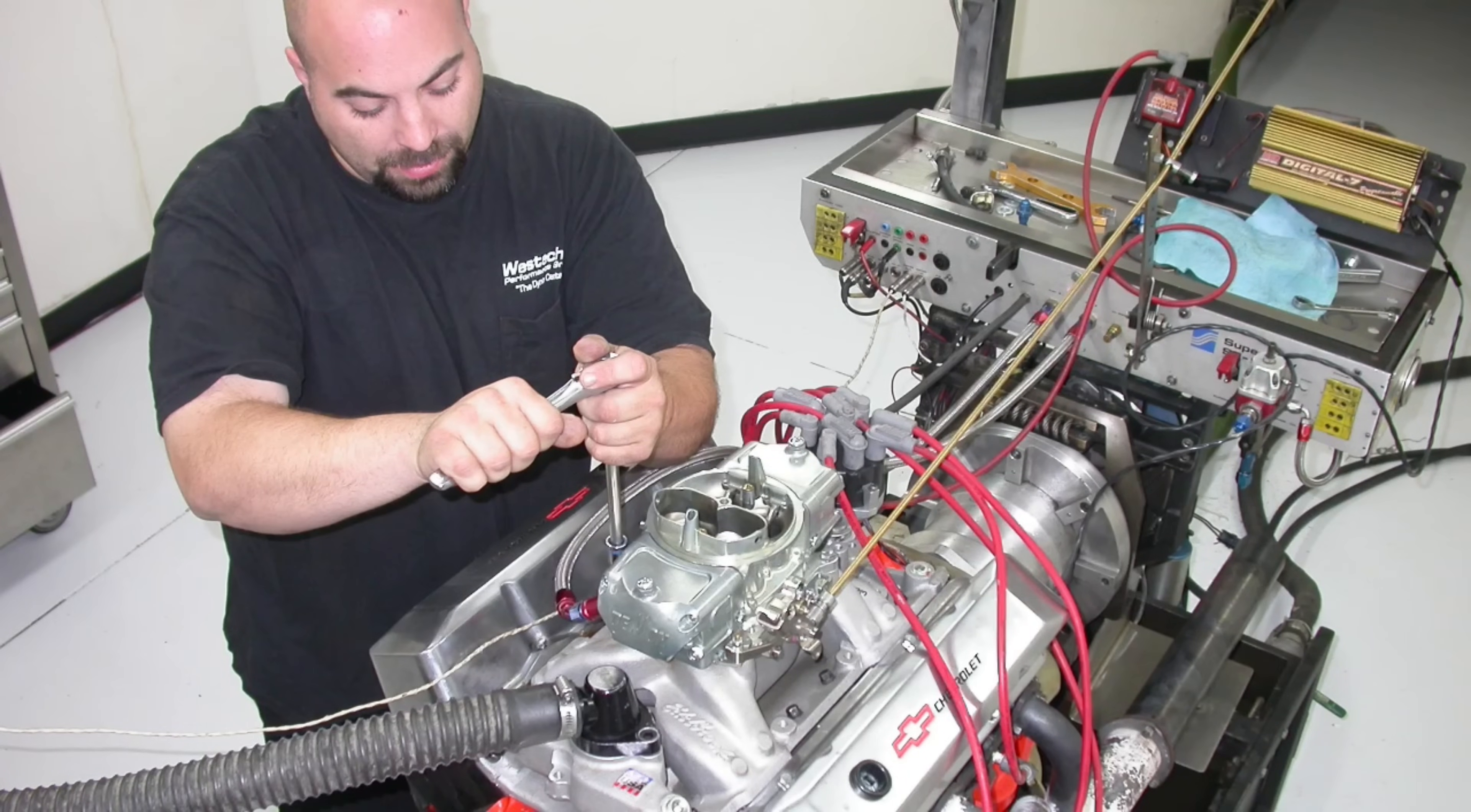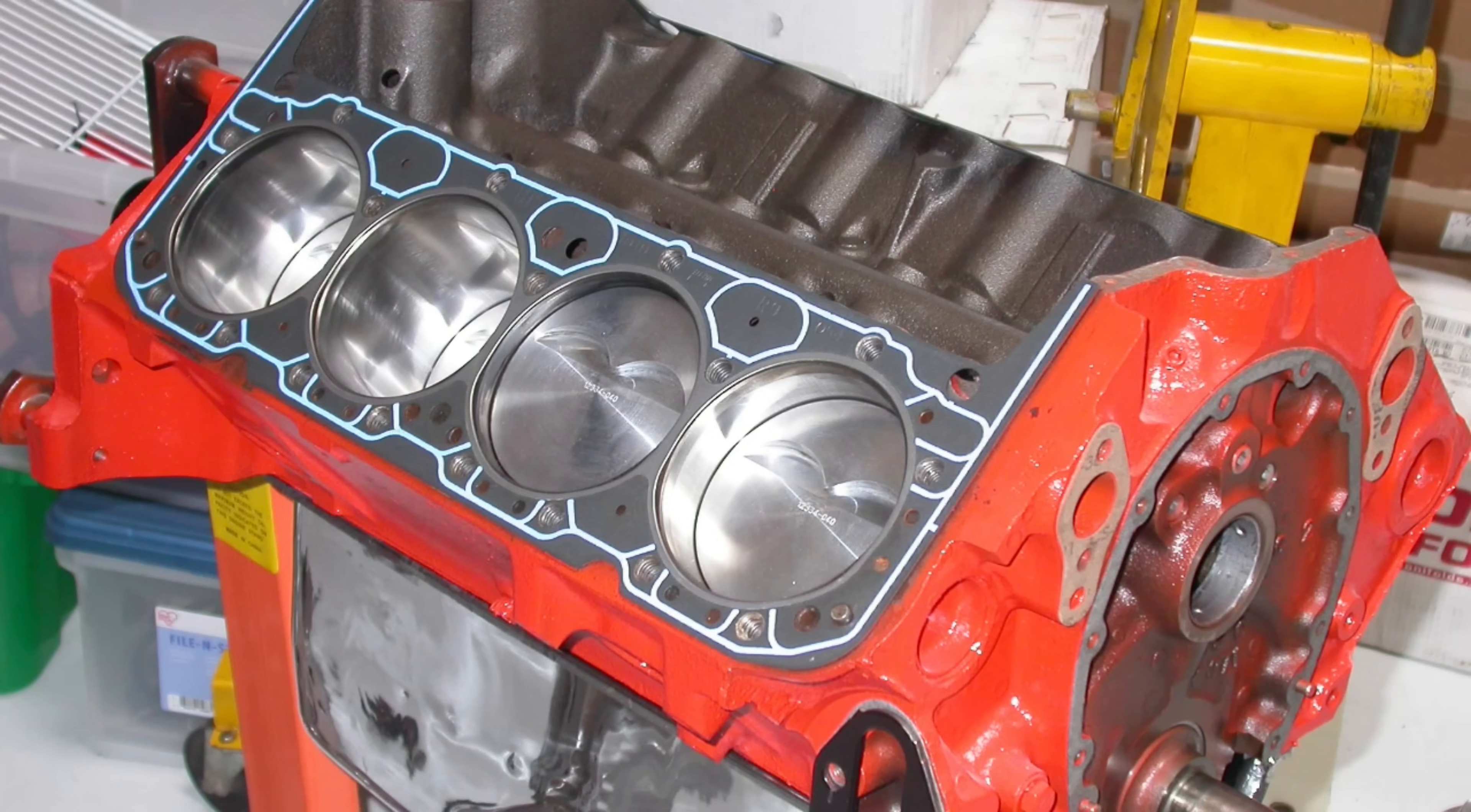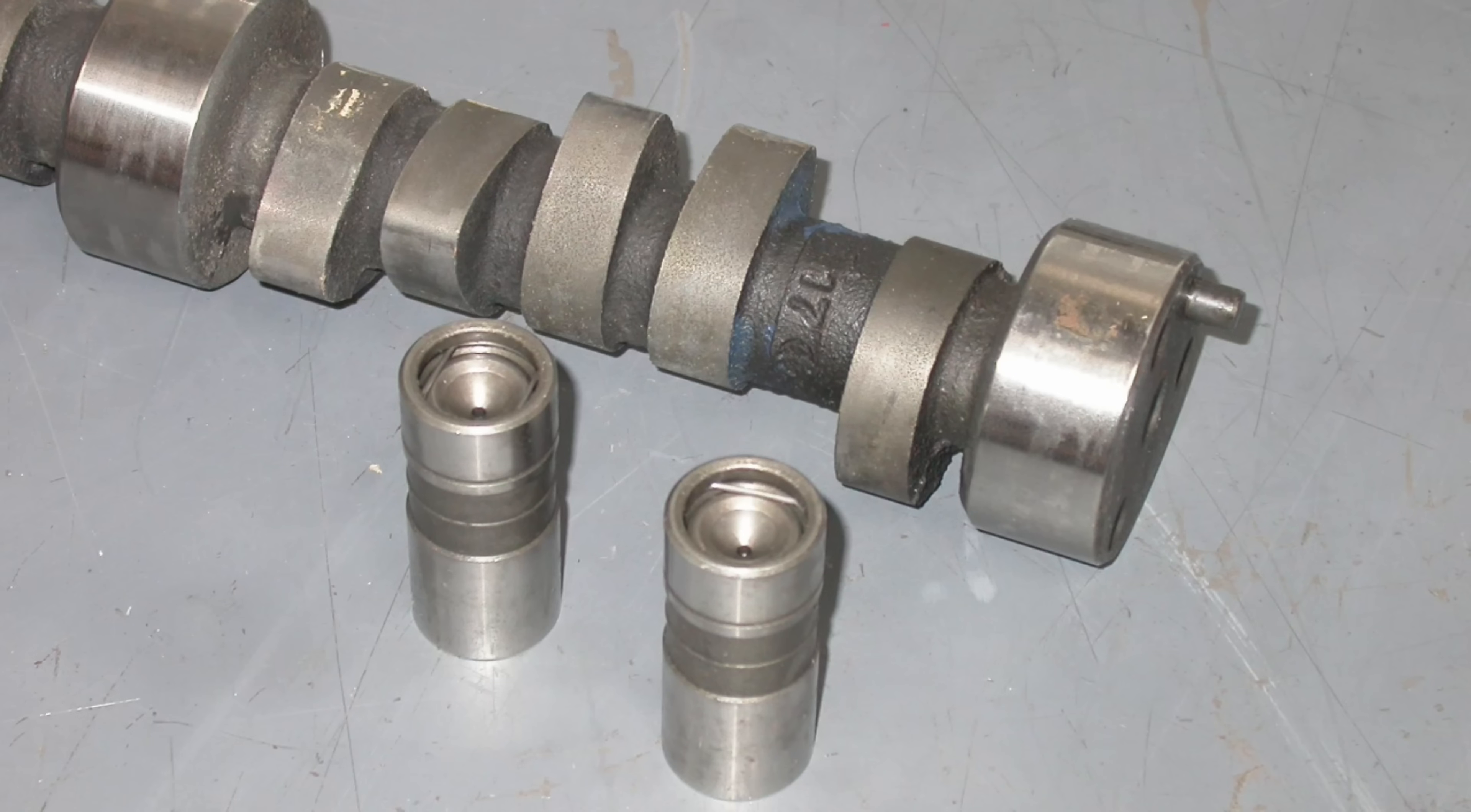Today we're looking at the small block Chevy. Not only that, we're looking at your basic power modifications to your bare bones small block Chevy. We're talking about a two-barrel equipped cast iron manifold, smog heads, tiny little camshaft - that's our starting point.